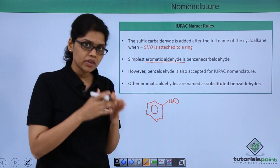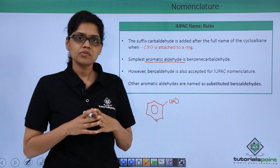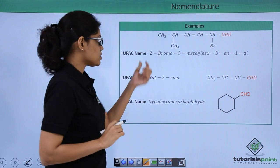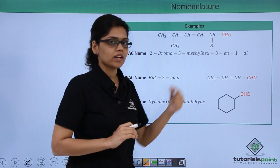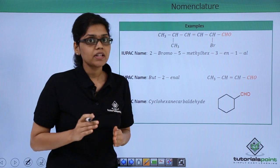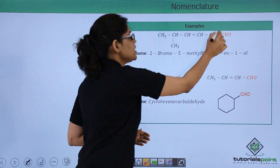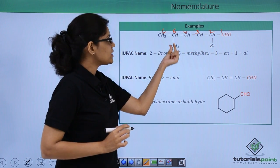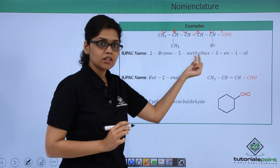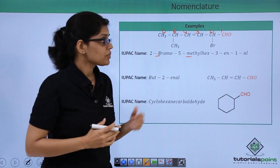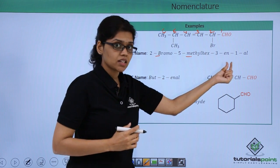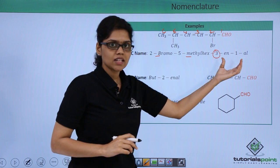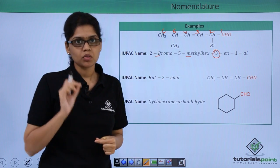Now let us go through a few examples. The first structure has the IUPAC name 2-bromo-5-methyl-hex-3-en-1-al. Since it is an aldehyde, numbering starts from the carbon of the aldehyde group: 1, 2, 3, 4, 5, and 6. Bromine is at C2 and methyl is at C5, so we have 2-bromo-5-methyl. Bromine comes before methyl alphabetically. There are 6 carbons, so it is 'hex', and the double bond is at position 3, giving hex-3-en-1-al. The '1' can be omitted since CHO is always numbered 1.